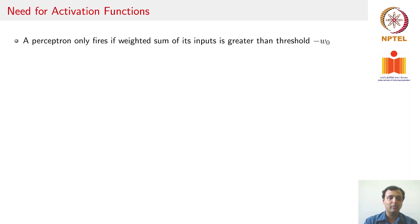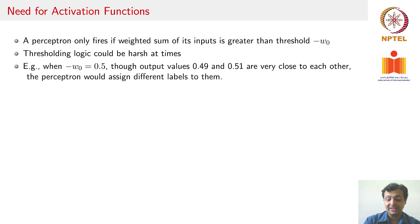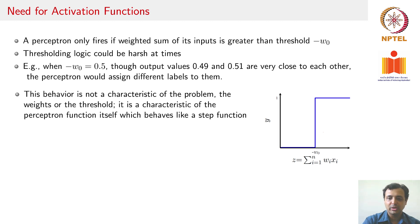The answer is we need something called activation functions. Why activation functions? We will see that in a moment. So far we noticed that a perceptron only fires when the weighted sum of its inputs is greater than a threshold -w0, or which was theta. This thresholding logic can become very harsh at times. For example, if your -w0 was 0.5, even 0.49 and 0.51 which are very close to each other will end up giving very different results because one of them is below the threshold and one of them is above the threshold, which means your thresholding function is a step function where you have a sudden change in your output even with a very small change in your input.